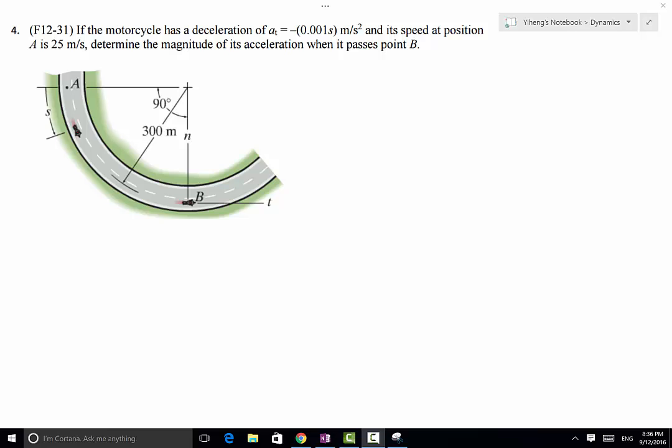In this problem, this motorcycle travels along this curved path with a constant radius of 300 meters. It starts at point A and travels to point B. Therefore it has traveled a quarter of a full circle.